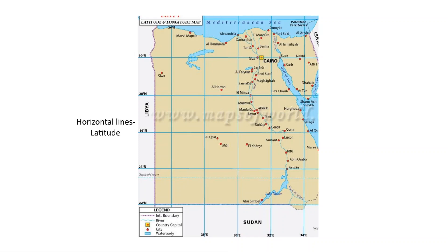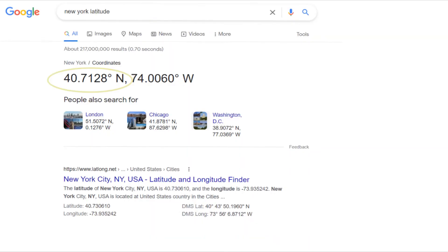So, that's latitude, those horizontal lines on the map. And if you want to know your latitude, well, Mr. Google can answer that in 2.1 seconds.